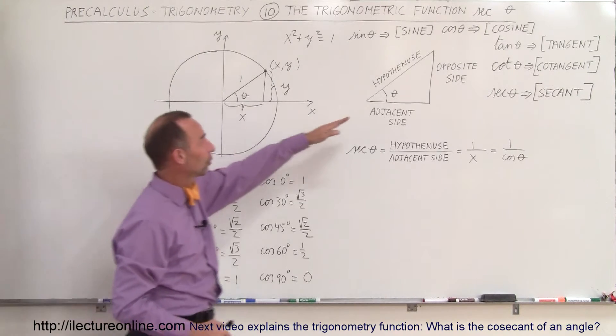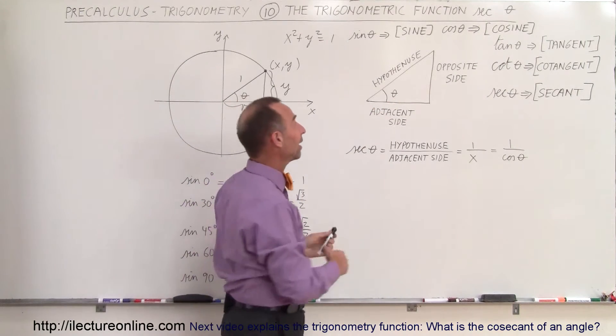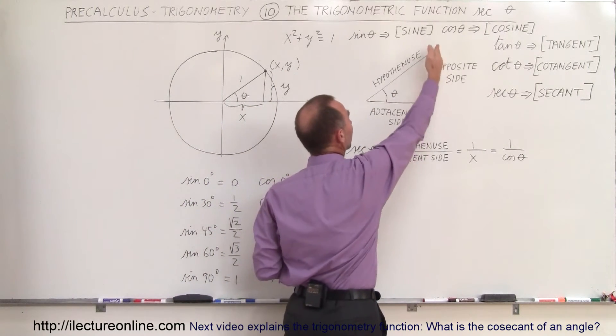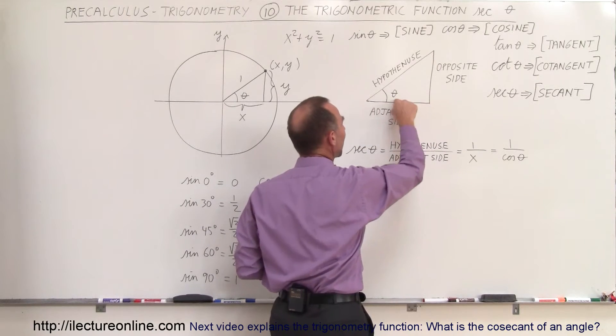Now if we draw this same triangle over here and name the sides: we call this the hypotenuse, this the opposite side to the angle, and this the adjacent side to the angle.